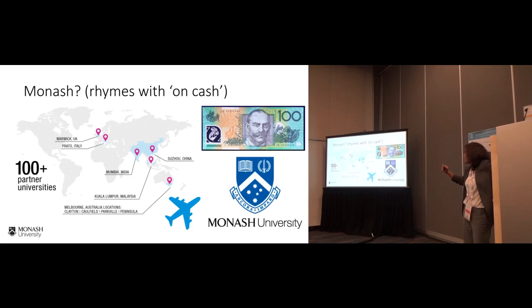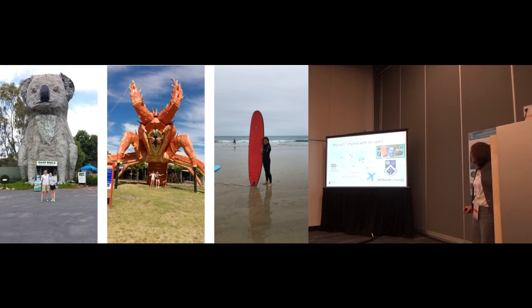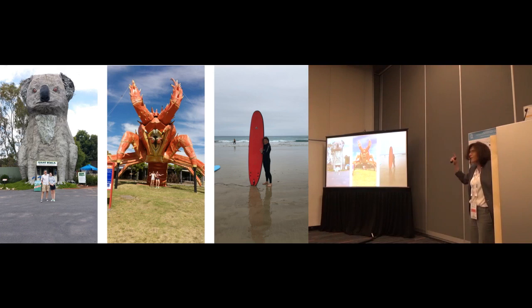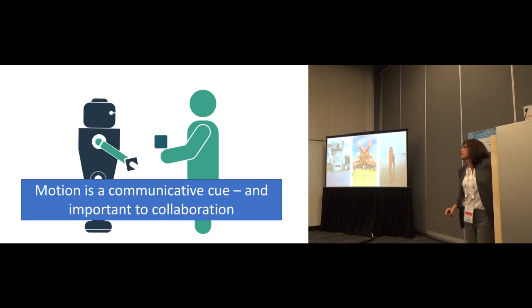Just to clarify, Monash rhymes with on-cache. I'm in Australia, down there at the bottom, and that's where we're located. We also have campuses in other places. I recently moved there from the University of British Columbia, and they have big koalas, very big lobsters, and very big surfboards, which is good when you're trying to learn to surf.